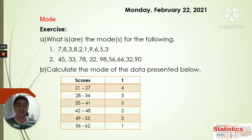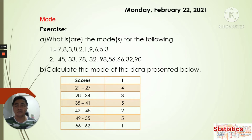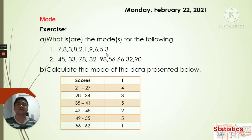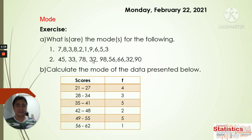We have here our exercise from the last meeting. For Letter A, we're going to figure out the mode for ungrouped data. From the data given, the most frequent numbers are 8 and 3, so our modes for this data set are 3 and 8 — we call it bimodal. For number two, 32 is our mode, so we have only one mode.